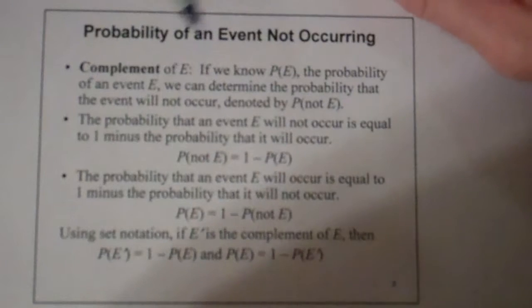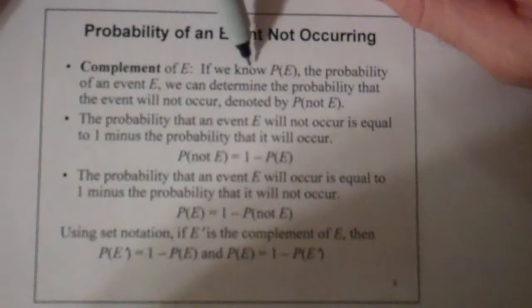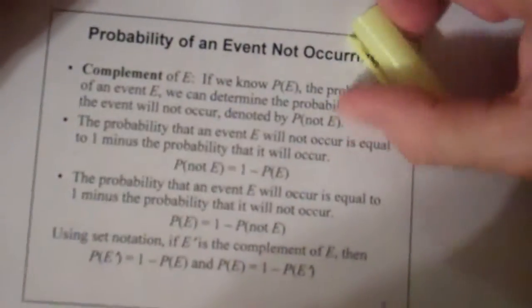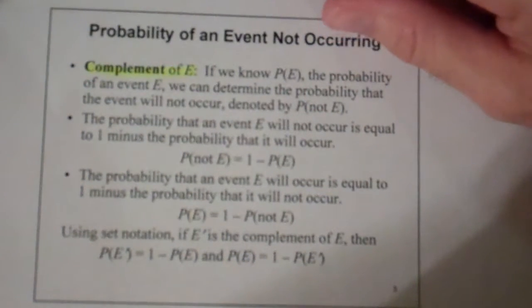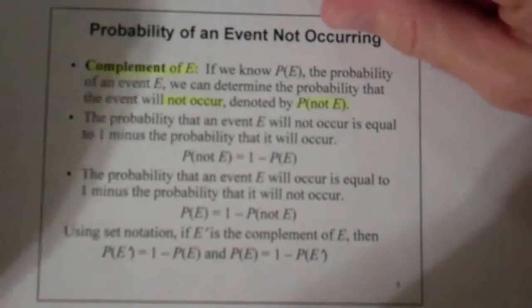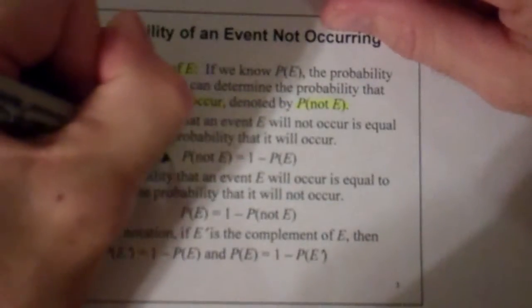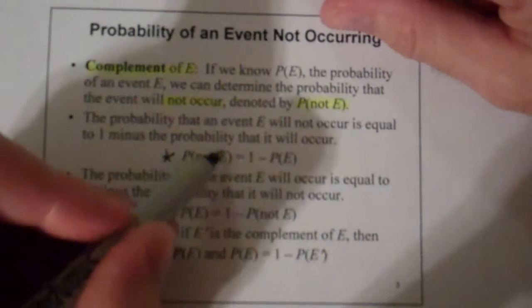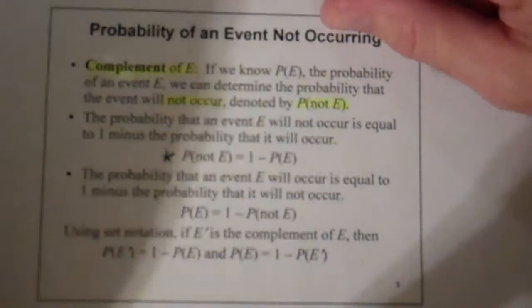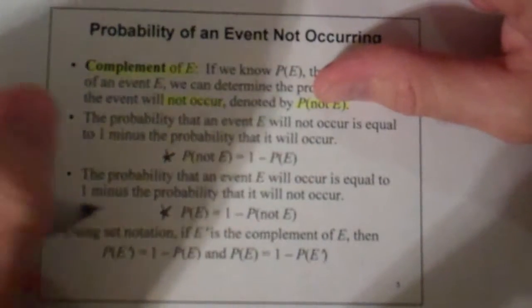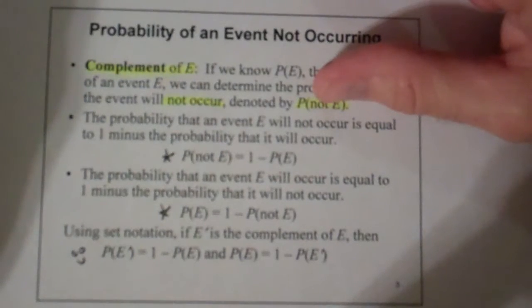The probability of an event not occurring is basically the complement of E. If we know the probability of an event, we can determine the probability that the event will not occur, denoted by 'not E.' The probability that event E will not occur is equal to one minus the probability that it will occur. It works in reverse too, because these two have to sum up to one.